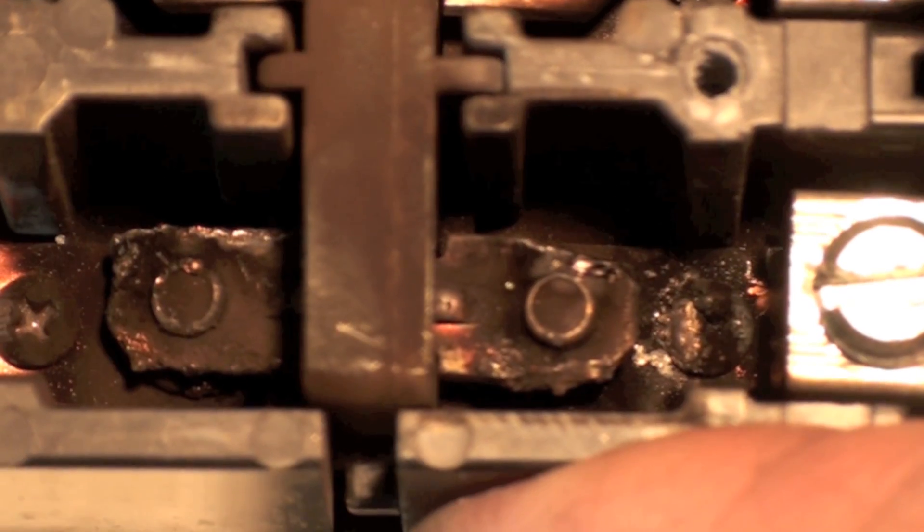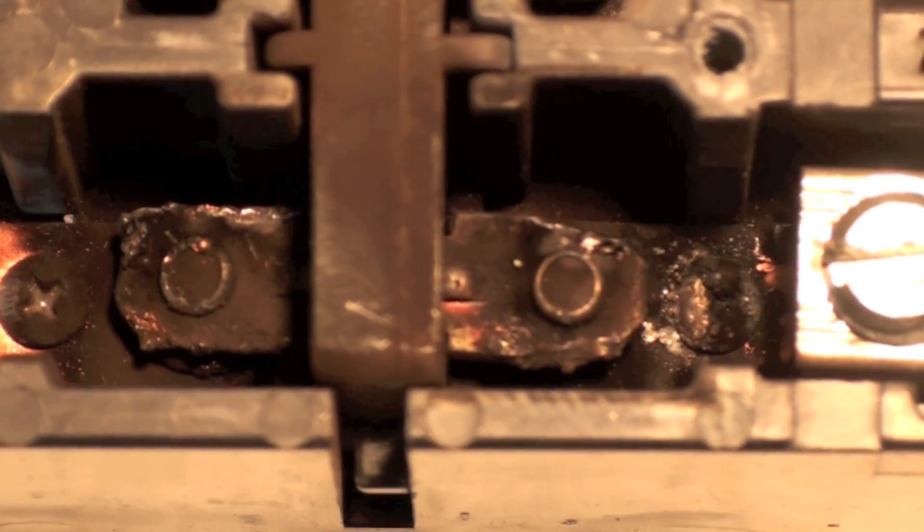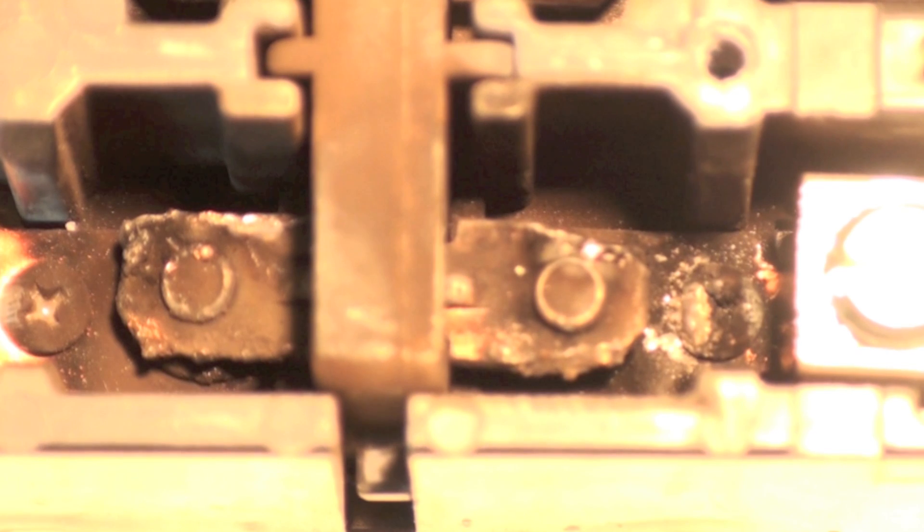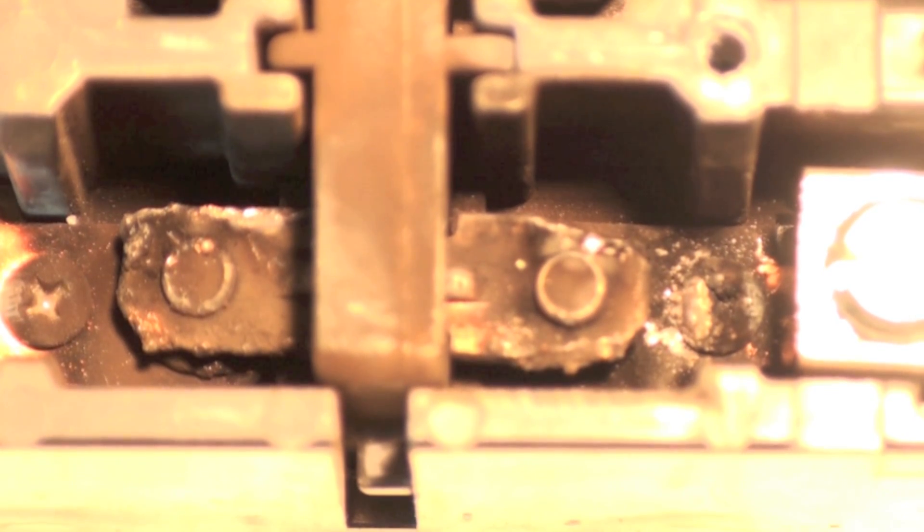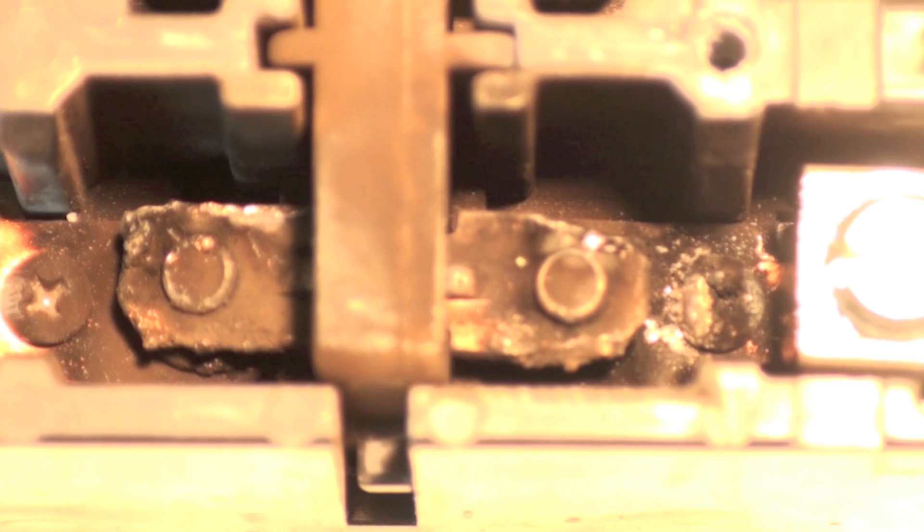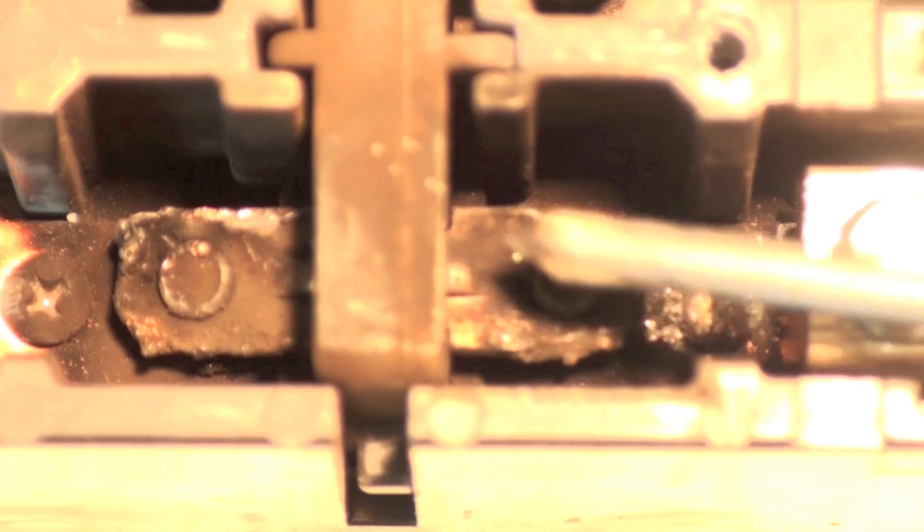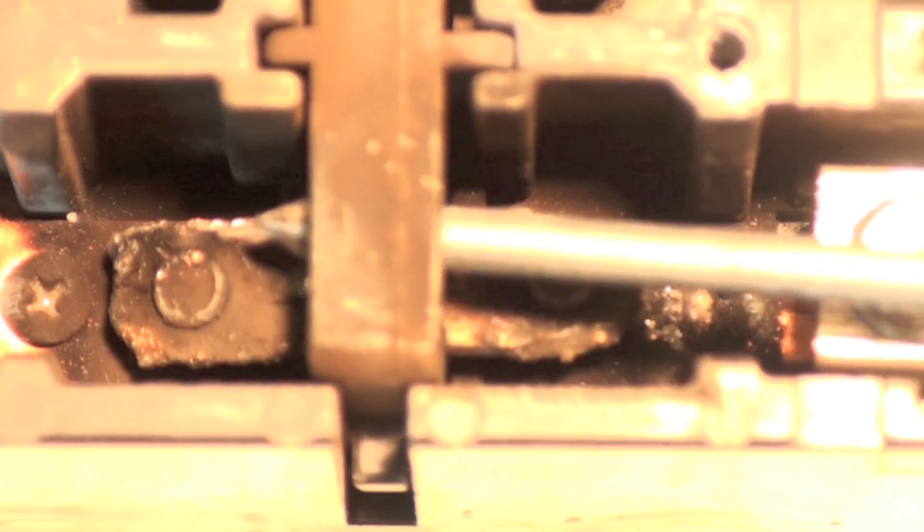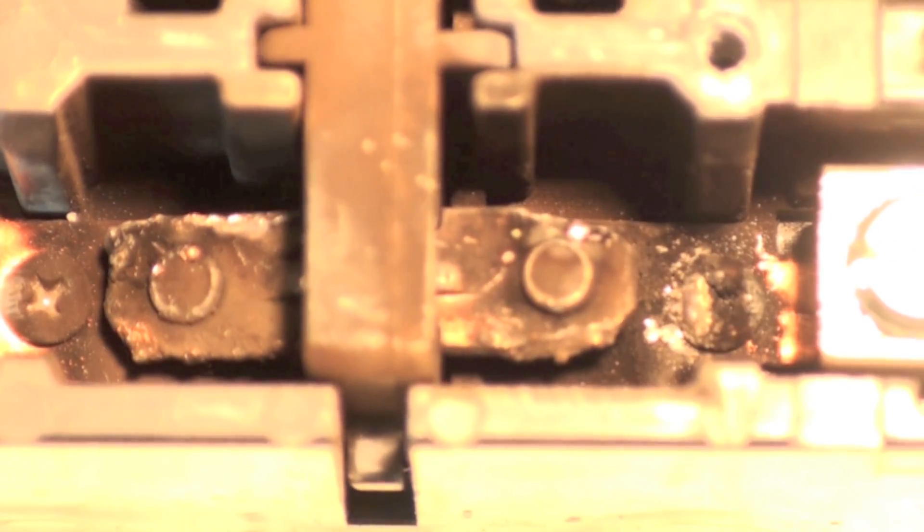This one here again is in really terrible shape. This has burned into this thing. May have chattered, which means it went up and down very quickly, or it's possible that this set of contacts here made poor contact. And then there's a little spring up here. The spring of this one was gone.